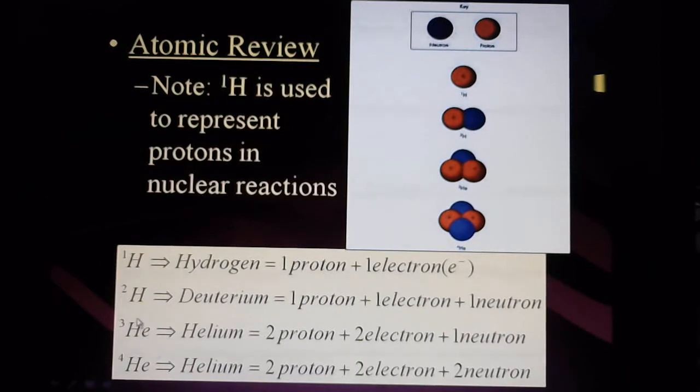The element that we have here, which has a three up there, is the less common form of helium that has two protons, otherwise it wouldn't be helium, and then one neutron added to that. The picture would look like this where you have two positive charges and then one neutron with it.